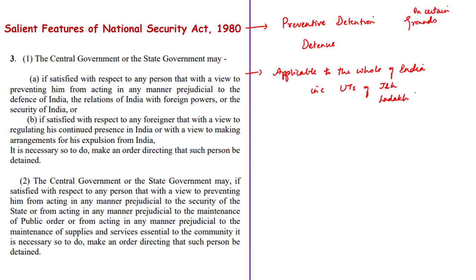Both central and state governments can make an order to direct that a person can be detained. With respect to union territories, the state government refers to the administrator of the concerned union territory as defined under this act — it can be an administrator or a lieutenant governor depending on the union territory. Now let us see some of the grounds on which a person can be subjected to preventive detention.